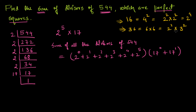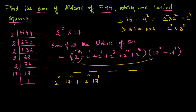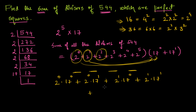So for divisors of 544 to be perfect squares, their prime factorization should have even powers of all prime factors. Each term obtained by expanding the divisor sum expression must have even powers. For example, 2⁰ × 17⁰ is valid, but 2⁰ × 17¹ is not, because 17 appears with an odd power of 1.